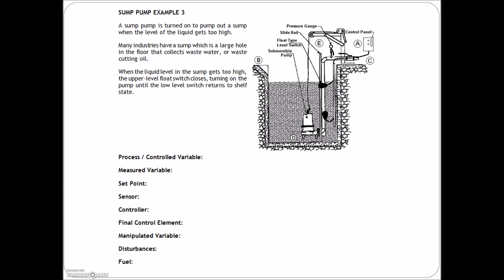Next one is a sump pump. We've got a sump pump with a float switch — when the liquid level in the sump gets too high, the upper level float switch closes, turning on the pump until the lower switch returns it to shelf state. So we have two limit switches, a high and a low limit, controlled by a small control panel. What we're trying to control is level — we're trying to control the level in the sump pit. We've got two float switches directly looking at the level in that tank.